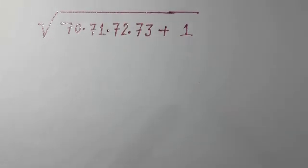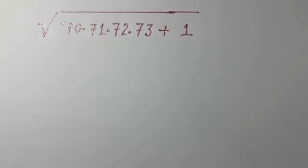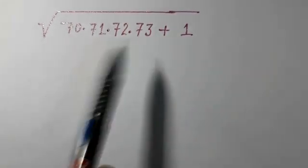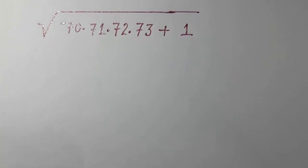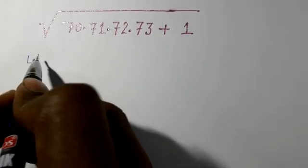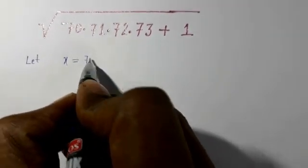To solve it, we see that everywhere plus 1 is incremented up to 73. So what I do is I can take a variable x equal to 70.